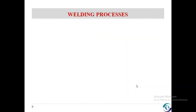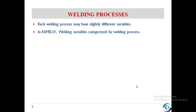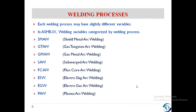Before proceeding to discuss the welding variables, we must know about the arc welding process. Arc welding processes are those which use heat to join materials with or without use of pressure, with or without use of filler metal, as required by the applicable code of the end user. Each welding process may have slightly different variables. In ASME Section 9, welding variables are categorized by the welding process. Here is the list of some arc welding processes.